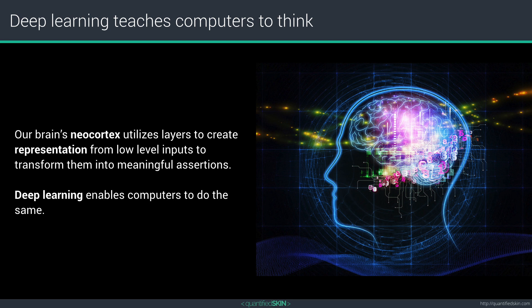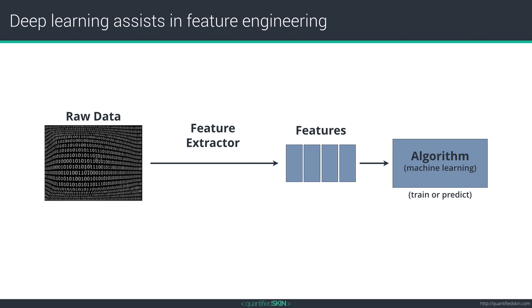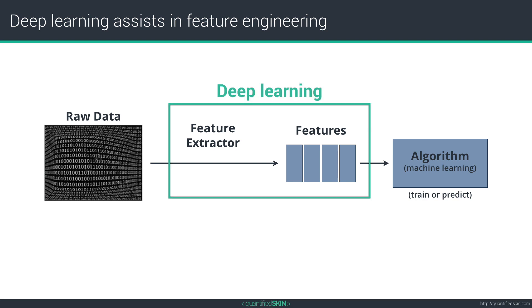Deep learning is very much in the media today, but wasn't so much in early 2013 when we started. The fascination behind deep learning is that it removes a lot of the laborious feature engineering that engineers have to perform. This has certainly added a lot of value in the search and advertising space. However, in the material or biology space, I'll make the argument that it is still essential to perform some feature engineering.